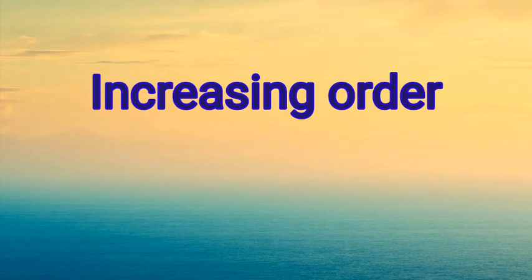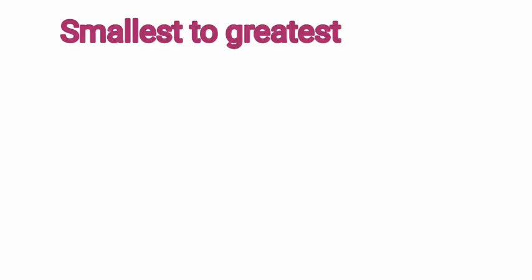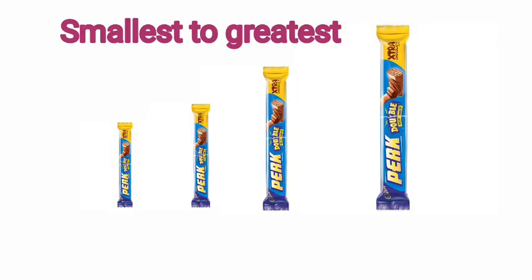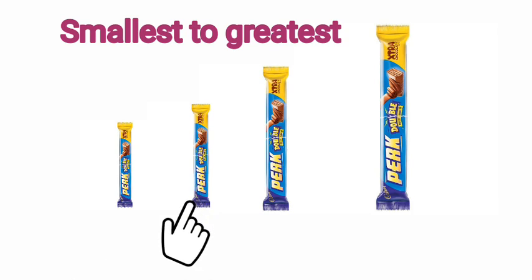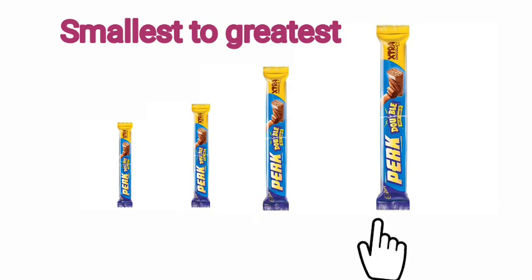First one: increasing order. Let's see the image. First one, chocolate — the smallest one. Next, a little bigger. Next, a little bigger than that. Then, the next one is a little bigger still. So, smallest to greatest is known as increasing order.